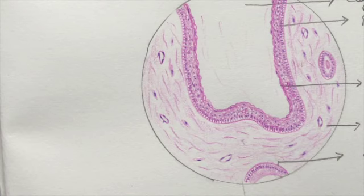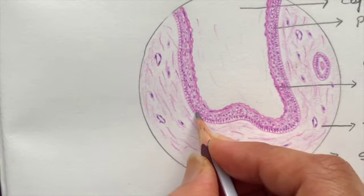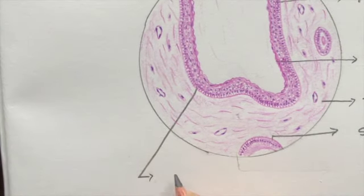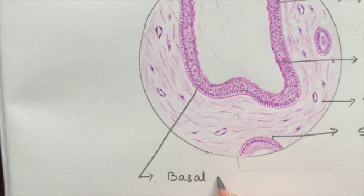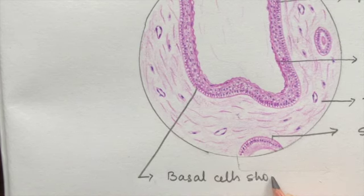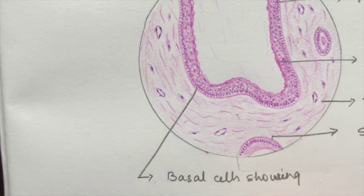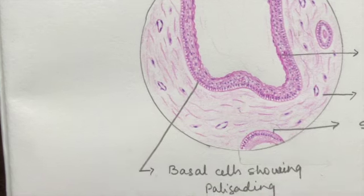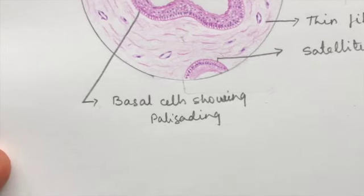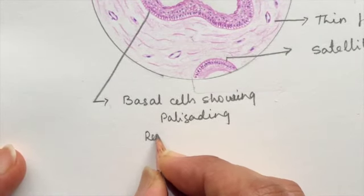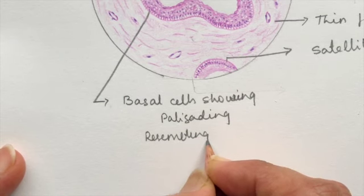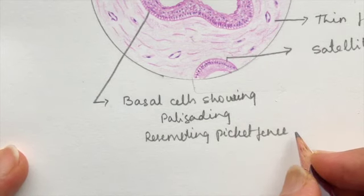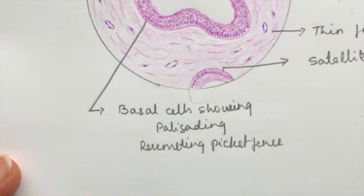Once we label the surface corrugation, it is very important to label the basal cell palisading. So here it is: basal cells showing palisading. You can even write resembling picket fence appearance or tombstone appearance.